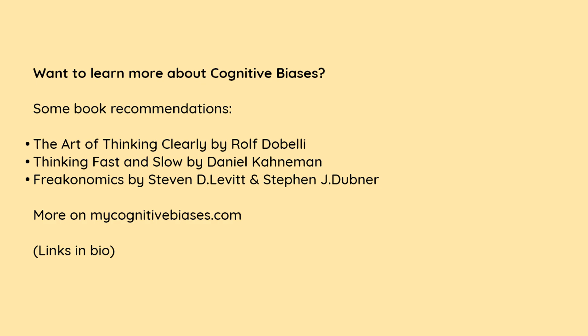Thinking Fast and Slow by Daniel Kahneman. Freakonomics by Stephen D. Levitt and Stephen J. Dubner.